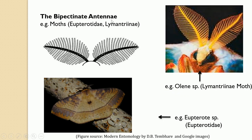The second subtype is bi-pectinate antennae, where the flagellar segments have extensions on both sides — two pectens, one on the right and one on the left. This is a characteristic of moths belonging to the family Eupterotidae and the Lasiocampidae. The males of these moth families are provided with such bi-pectinate antennae, which have very powerful receptors capable of recognizing pheromones coming from females over a long distance.